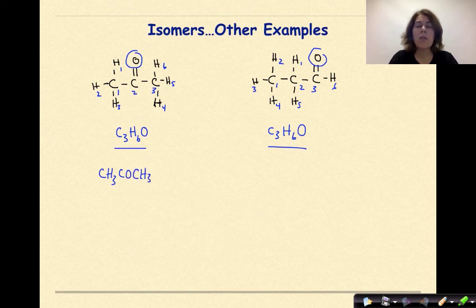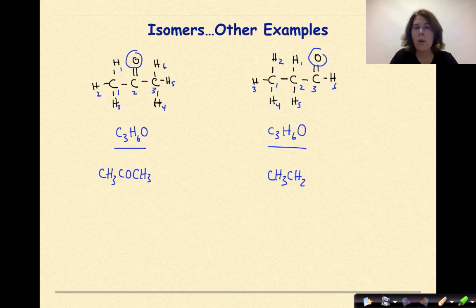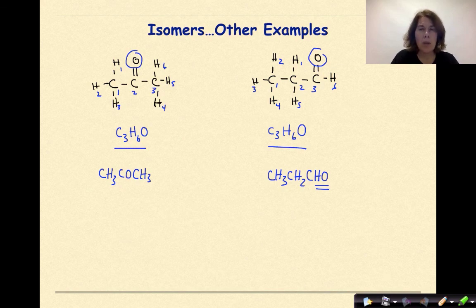If I was to do the condensed structural formula of the one on the right, again, I'd start over at the left with the first carbon. CH3CH2. Now here's where things get sort of interesting. I don't want to put COH. That's an alcohol. So when you have something called an aldehyde, and we'll see this again in the future, we want to write this condensed structural formula as CHO. And that is really, really important because that is different from what an alcohol looks like and something that you need to be familiar with.